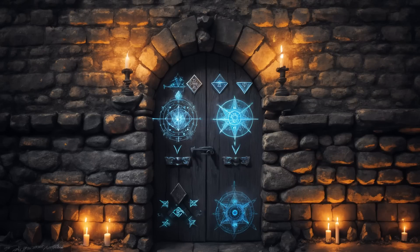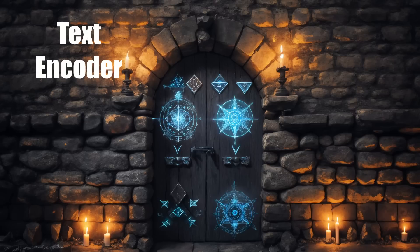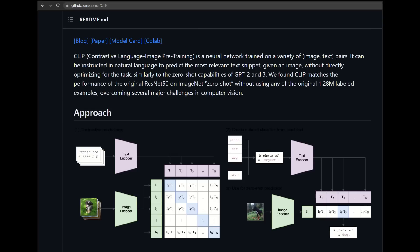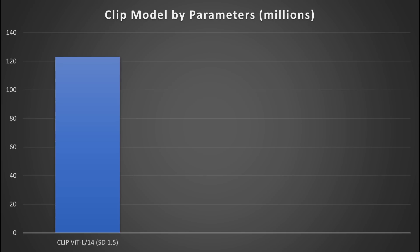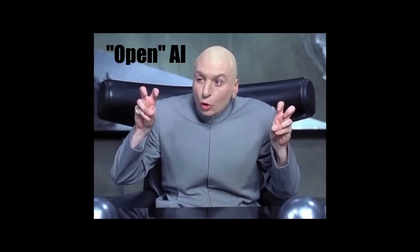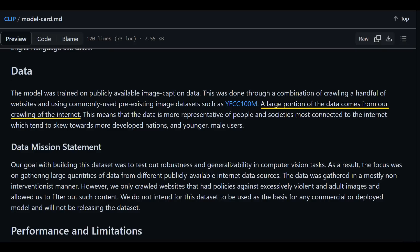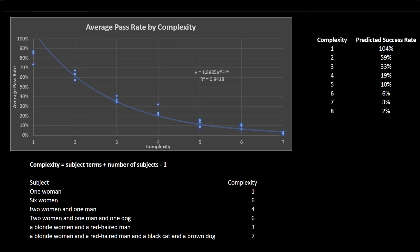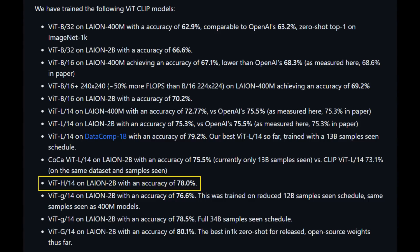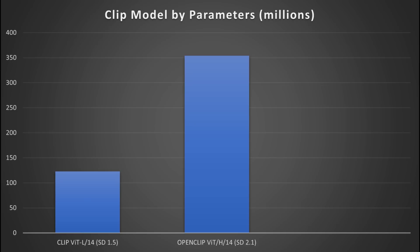One thing people often forget is that diffusion models are composed of several neural networks, and the most important other one for Stable Diffusion is the text encoder. For Stable Diffusion 1.5, the text encoder was a frozen version of CLIP-ViT-L/14, which has 123 million parameters. This version is directly from OpenAI and was not trained on a publicly available dataset. This model apparently has an accuracy of 75.5%. The so-called tragic miscarriage, also known as Stable Diffusion 2, used OpenCLIP-ViT-H/14, which was trained on LAION-2B and has 354 million parameters — almost three times as many.